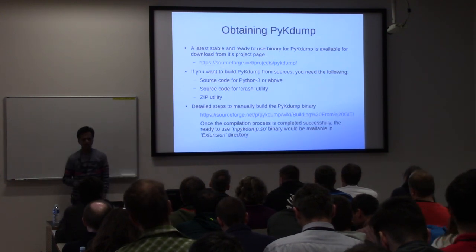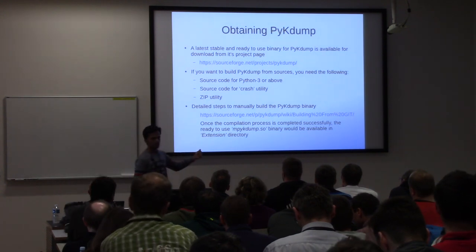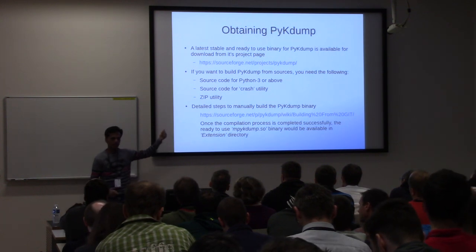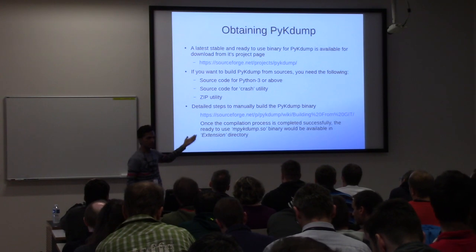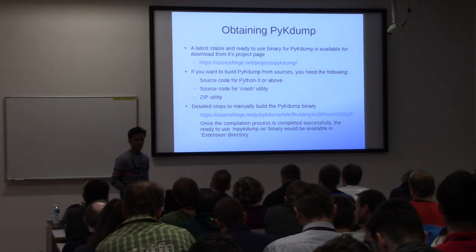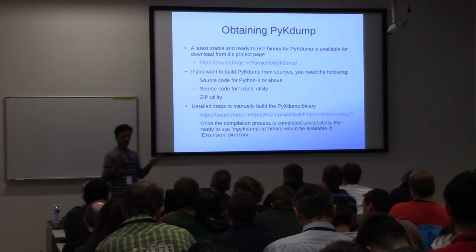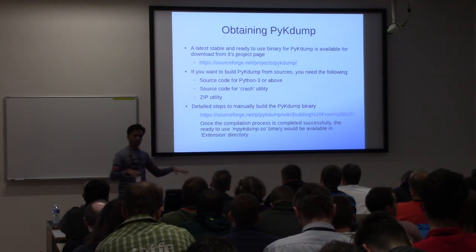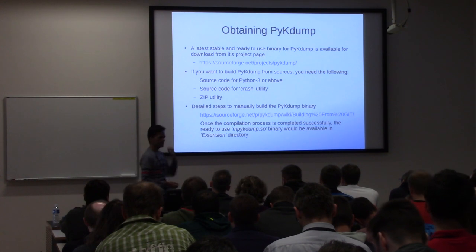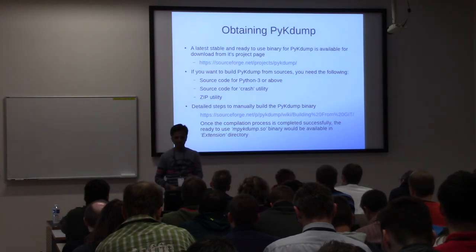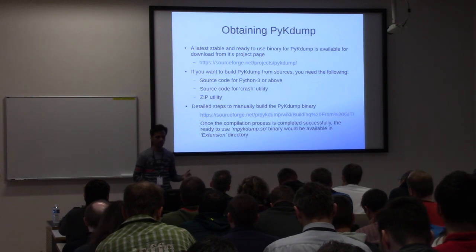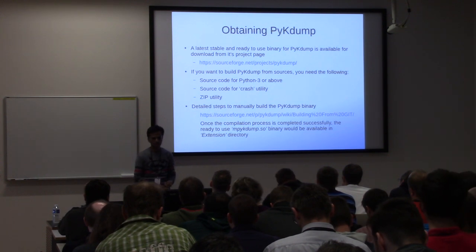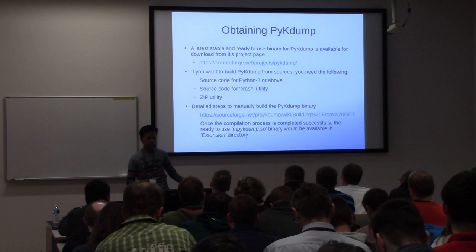The upstream project page is hosted on SourceForge.net. A ready-to-use binary containing all the discussed programs is right there. All you have to do is download it, use the `extend` command to extend your crash environment, and start using these programs — no extra compilation is needed. If you want to modify it or compile separately for different architectures like PPC or S390, there are manual steps to build the PYKDUMP binary from the source code for crash, zlib utility, and Python.